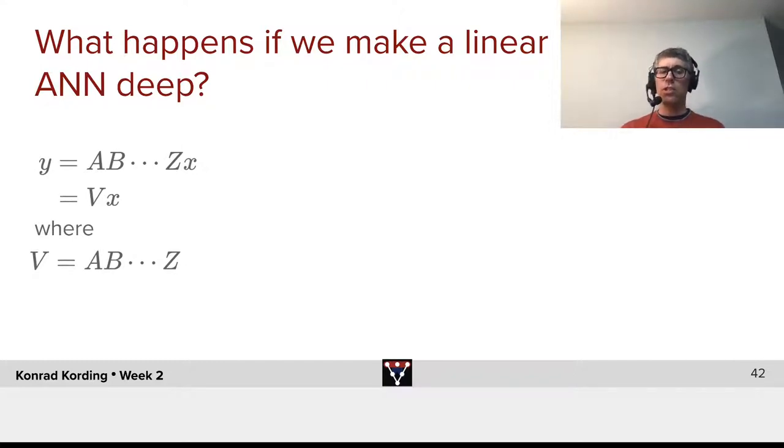But that's really not changing anything. I can now rewrite this as V times X, where V is the product of the matrices A through Z. So, making linear artificial neural networks deep makes no difference in a way.